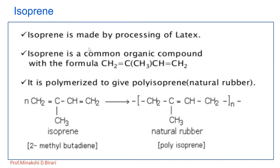Natural rubber is made from repeating isoprene units, and this isoprene is made by processing of latex. Latex is nothing but the colloidal dispersion of rubber particles in water.